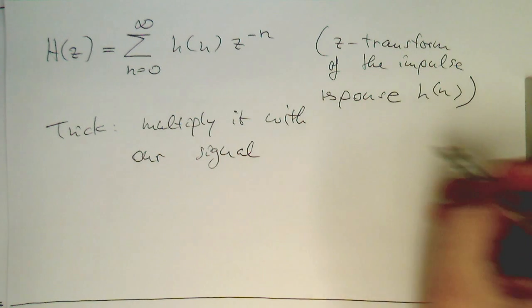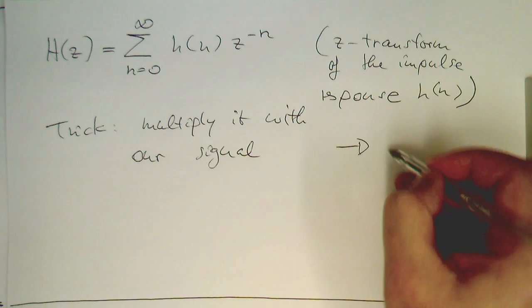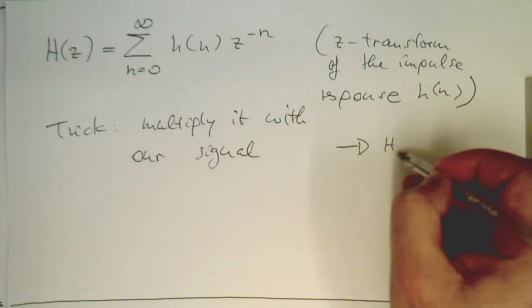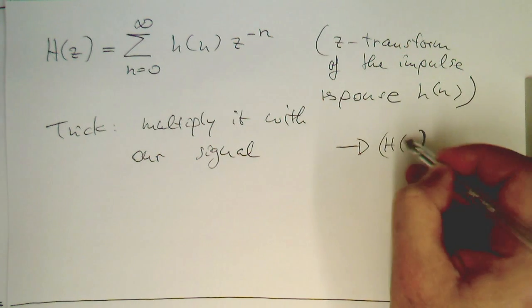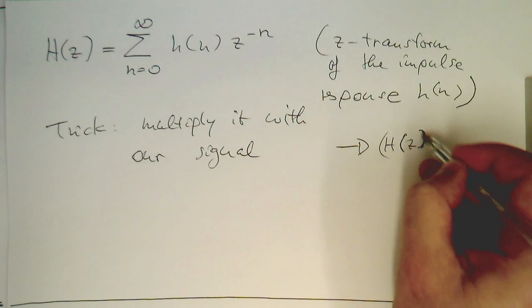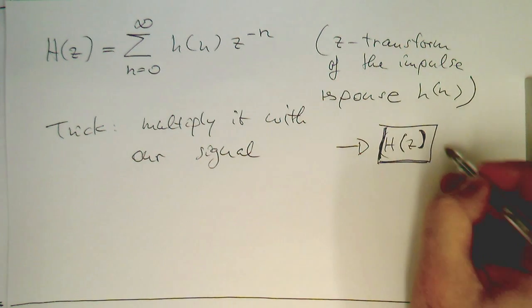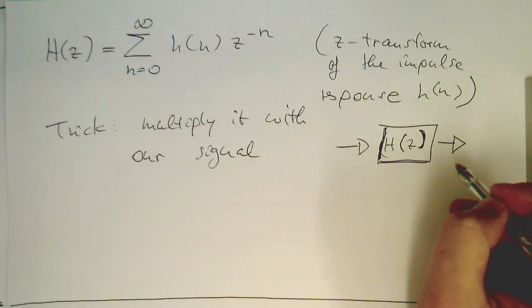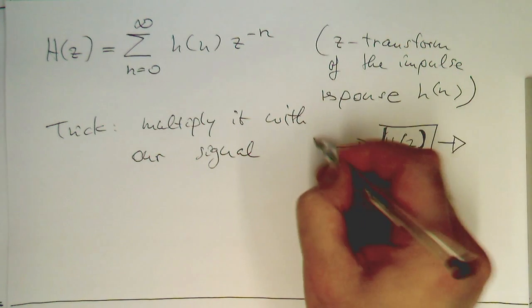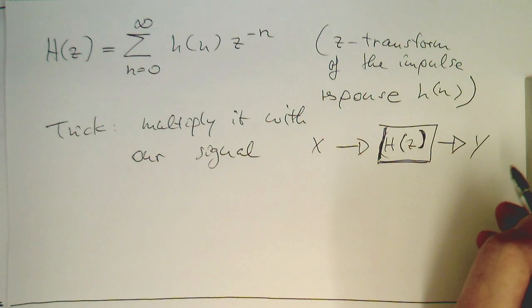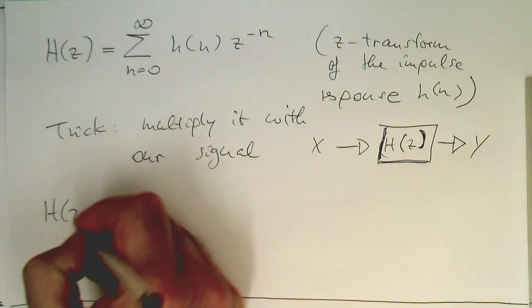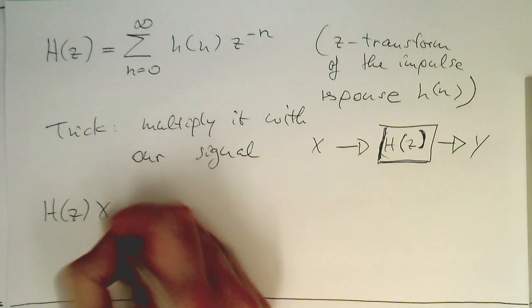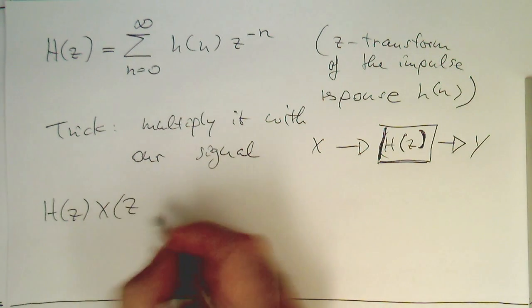Remember, we've got our box here. Let's write this here as H(z), write this as a proper box like this. This was our X, and this is our Y signal here. So now what we can just write is H(z) multiplied by X(z).